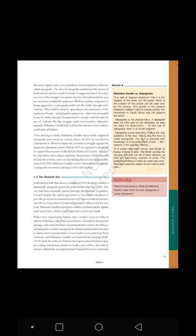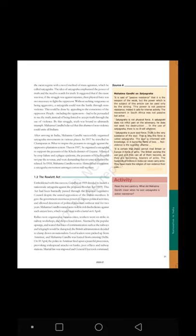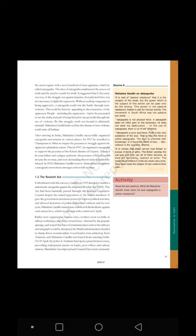The Rowlatt Act — Emboldened by his success, Gandhiji in 1919 decided to launch a National Satyagraha against the proposed Rowlatt Act 1919. This act had been hurriedly passed through the Imperial Legislative Council despite the united opposition of the Indian members. It gave the government enormous powers to repress political activities and allowed detention of political prisoners without trial for two years. Mahatma Gandhi wanted non-violent civil disobedience against such unjust laws, which would start with a hartal on 6 April. Rallies were organized in various cities, workers went on strike in railway workshops, and shops closed down.